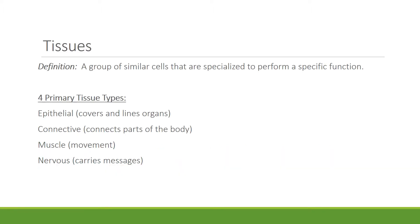By definition, a tissue is a group of similar cells that are specialized to perform a specific function. There are four primary tissue types in the human body: epithelial tissue, which covers and lines organs; connective tissue, which connects parts of the body; muscles, which are for movement; and nervous tissue. We're going to spend a little time looking at each of these.